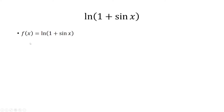Let's start off with our function f(x) = ln(1 + sin x). The derivative is just 1 over the inside multiplied by the derivative of the inside, so that's 1 over (1 + sin x) times cos x.